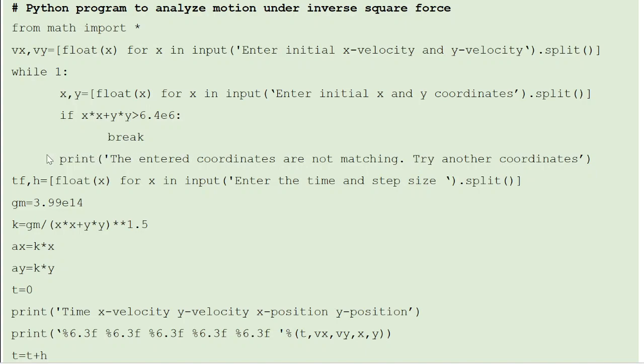If not, you print 'entered coordinates are not matching, try another coordinate.' So you enter another set. Then the conditional check is done. Only if the conditional check is true, then you come out of the loop. Otherwise, you keep repeating this iteration. So that's the idea behind invoking this kind of an infinite loop.